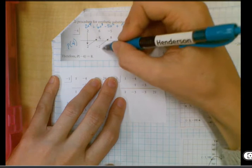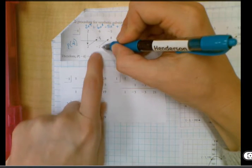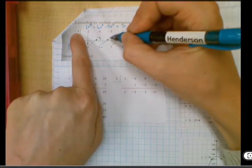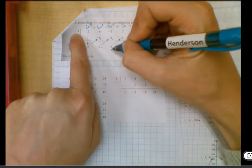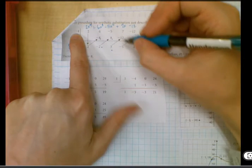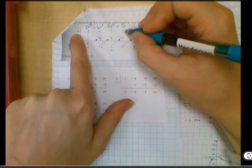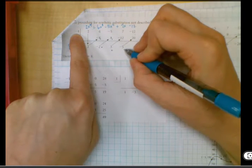We take 2 times negative 4 gives us negative 8, and then we add, we get negative 2. Negative 2 times negative 4 gives us positive 8, add straight down, we get 3. 3 times negative 4 gives us negative 12, add straight down, we get negative 5.